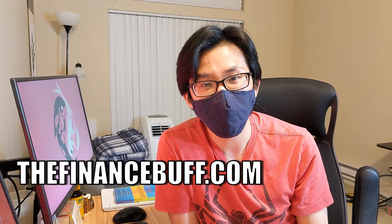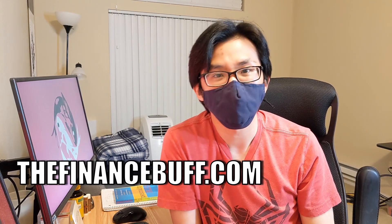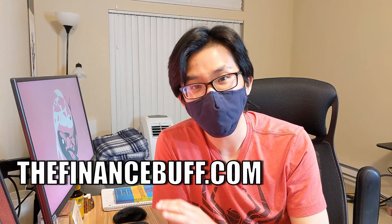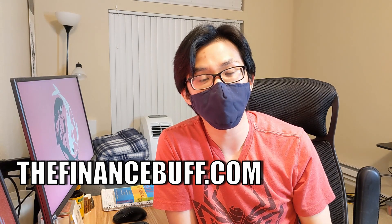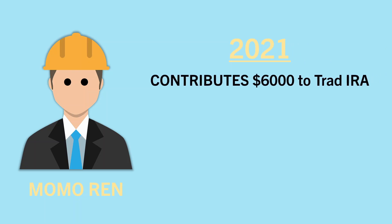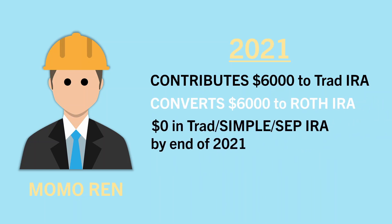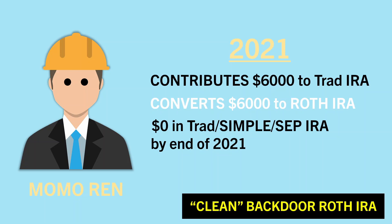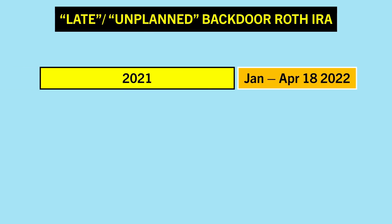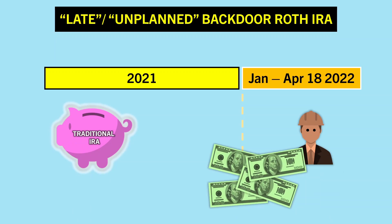I would like to give credit to a blogger called thefinancebuff.com who created very solid tutorials on how to do backdoor Roth IRA taxes on TurboTax. I am merely presenting what I've learned from that blog post in video form. I will link his blog post down in the description box below. Let's consider this situation. Our friend here, Mo Moran, contributes $6,000 to a traditional IRA in 2021 and then immediately converts it to a Roth IRA in the same year, and has $0 in traditional, SIMPLE, and SEP IRA by the end of the year. Let's call his move a clean backdoor Roth IRA conversion. This video will not cover the late or unplanned backdoor Roth IRA conversion. Instead, I will refer you to thefinancebuff.com's blog post on the late unplanned backdoor Roth IRA conversions.